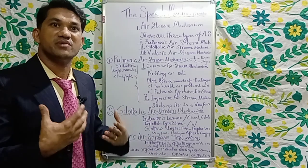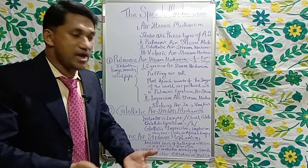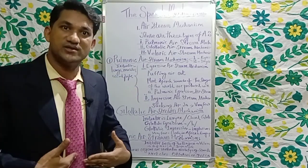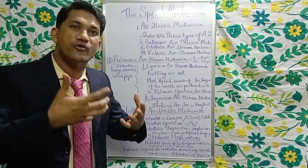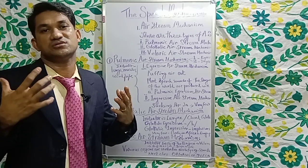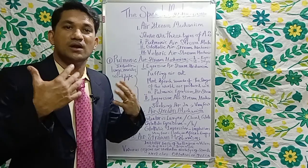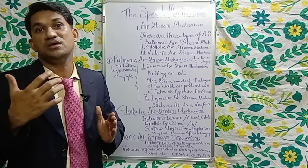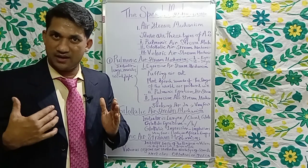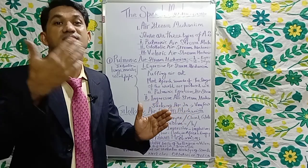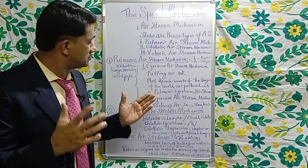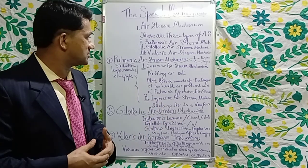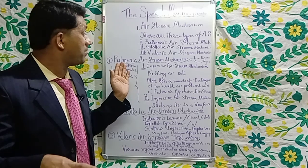The next is the ingressive air stream mechanism. Here, air is taken into the lungs — we are sucking air into the lungs. That process of sucking air into the lungs is known as the ingressive air stream mechanism. So the speech sounds are produced by the egressive air stream mechanism on one side and the ingressive air stream mechanism on the other. These are the two main air stream mechanisms within the pulmonic air stream mechanism that help us produce speech sounds.